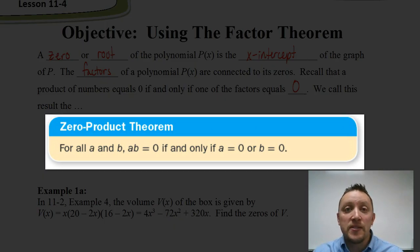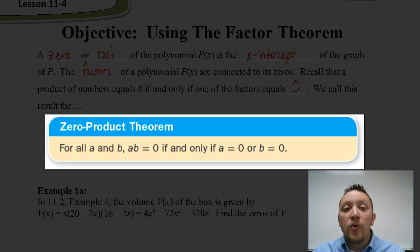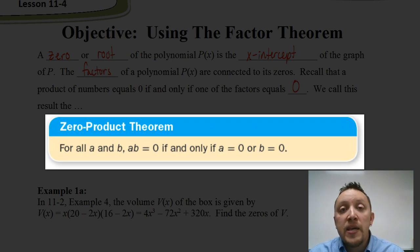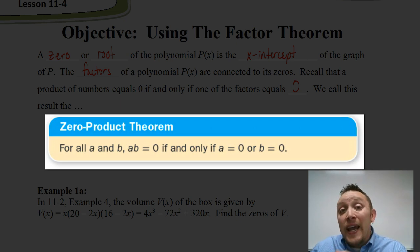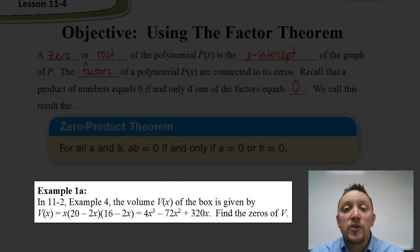This seems like complete common sense because if you multiply a number times zero, it's going to be zero. We can use that idea to help us solve equations when we have those equations factored. What the zero product theorem is telling us is if we have factor A and factor B multiplied together equaling zero, then either A equals zero or B equals zero. So we set those factors equal to zero, solve for x, and we have our zeros — or our roots — of the polynomial. It'll make a lot more sense when we look at some examples.